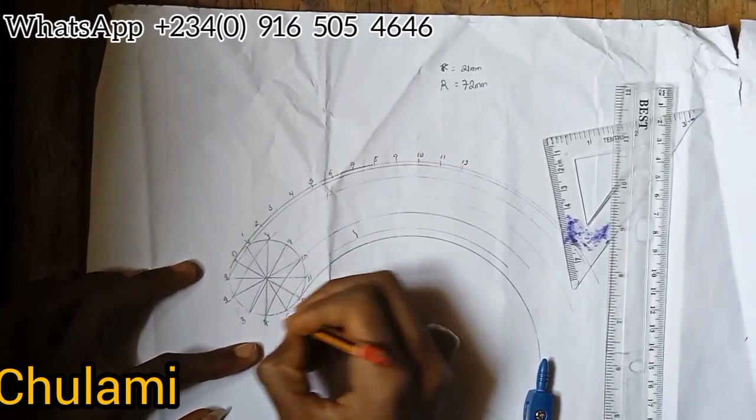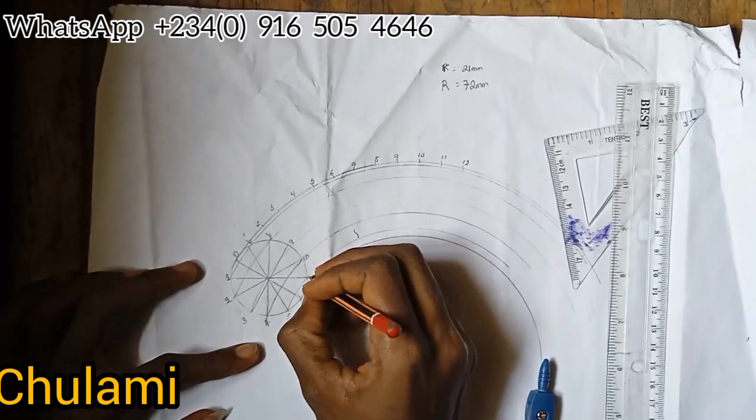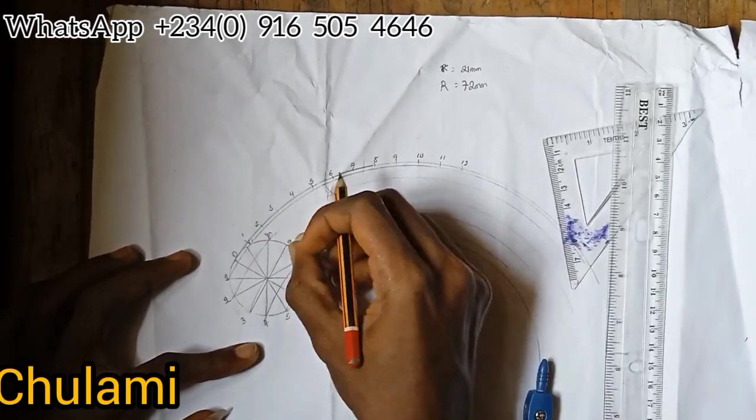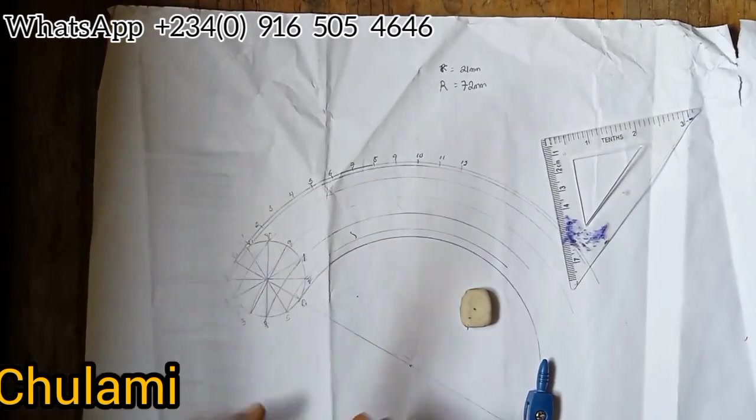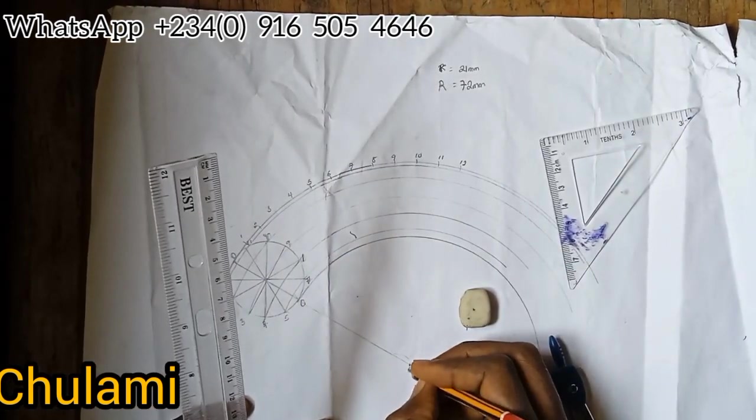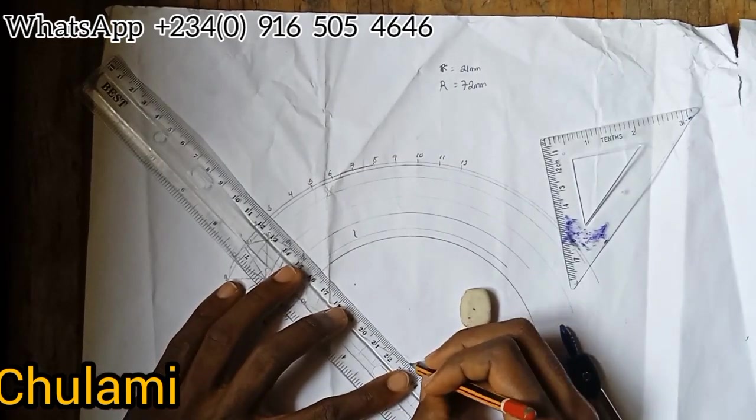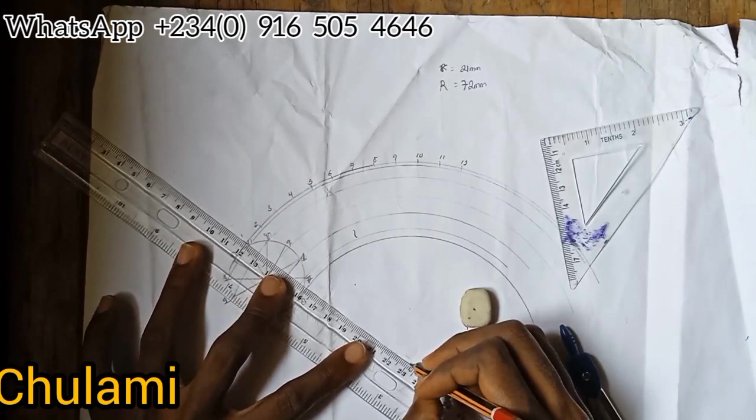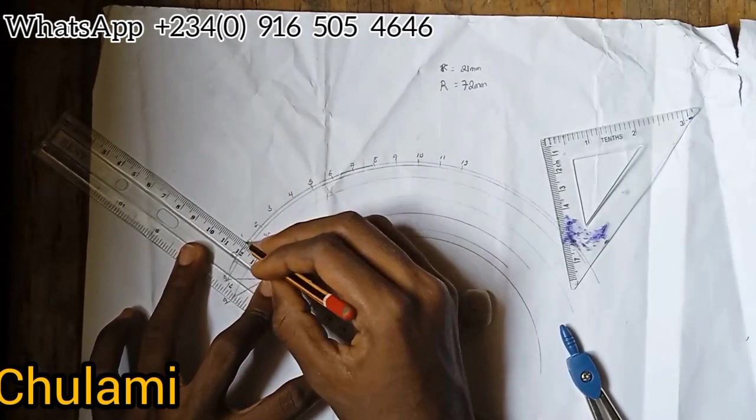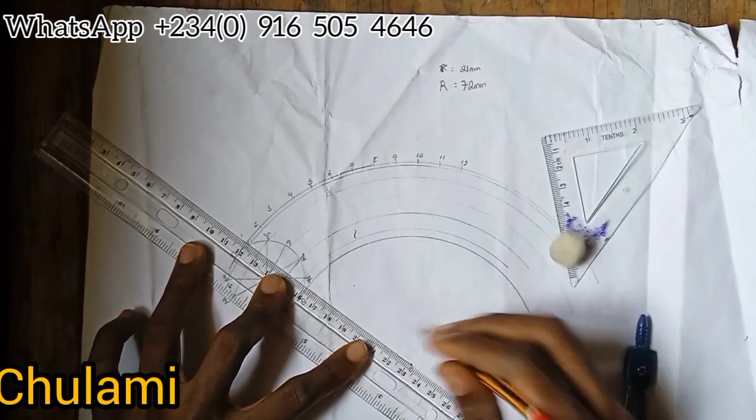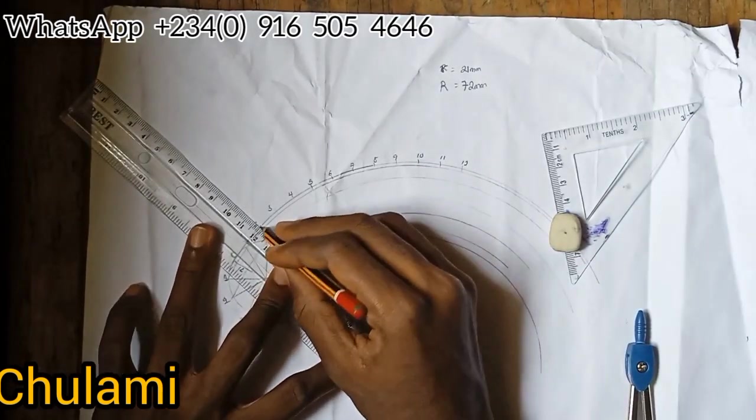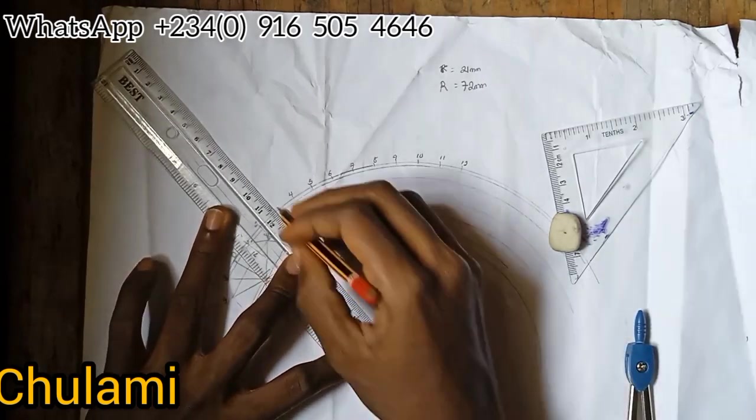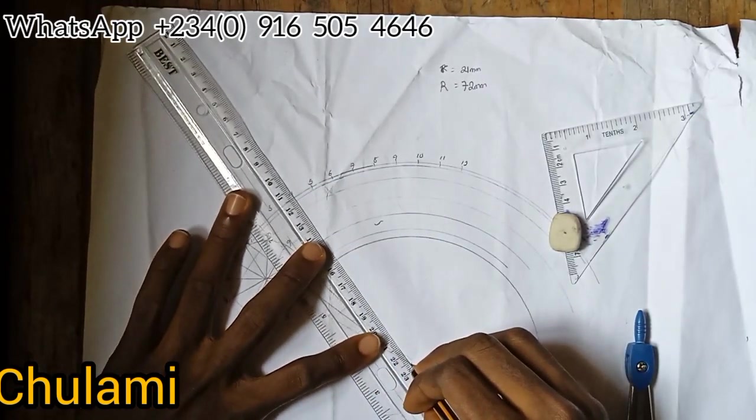I'll call here seven, eight, nine. Now from this point I'll call here point O. I will draw a line from O to meet all those arcs I marked on the bigger circumference, to one, from center to two, center to three. I'll do the same thing to 12.